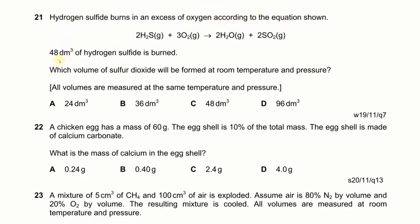Next: 48 dm³ of hydrogen sulfide is burnt in excess oxygen according to the equation. What volume of SO₂ is formed at room temperature and pressure? The ratio of H₂S to SO₂ is 2:2 (1:1), so 48 dm³ of H₂S produces 48 dm³ of SO₂ straightforwardly.